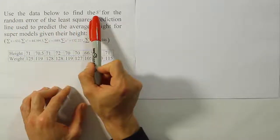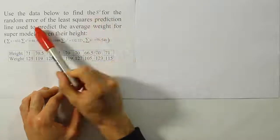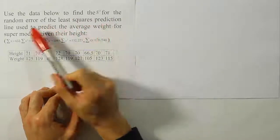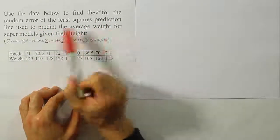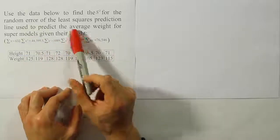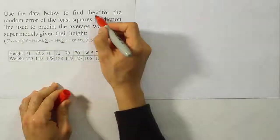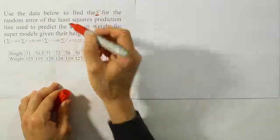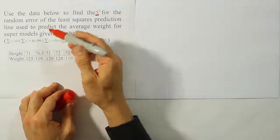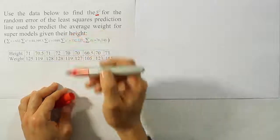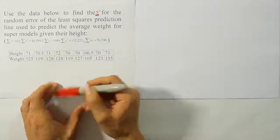Use the data below to find the S squared or the variance for the random error of the least squares prediction line used to predict the average weight for supermodels given their height. So we're looking for the S squared value, or in other words the variance for the random error of the least squared prediction line used to predict the average weight for supermodels given their height.